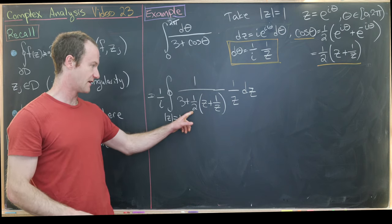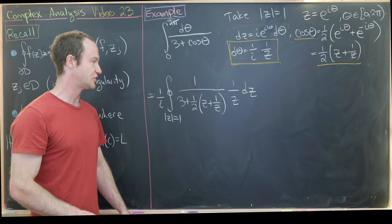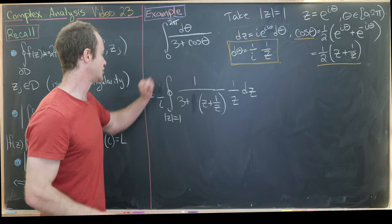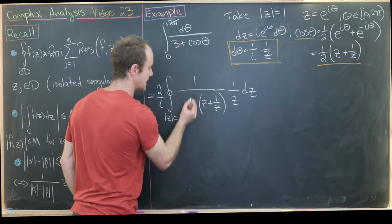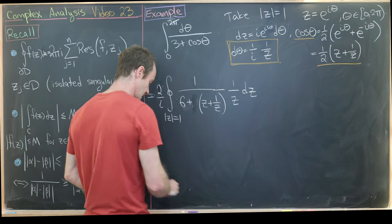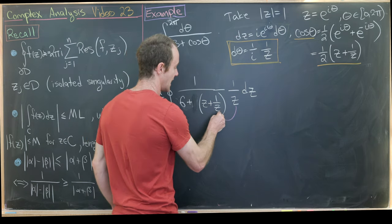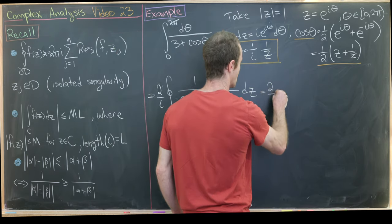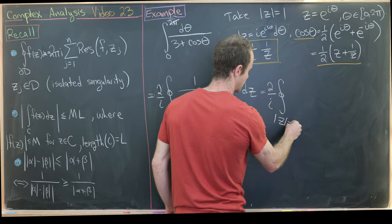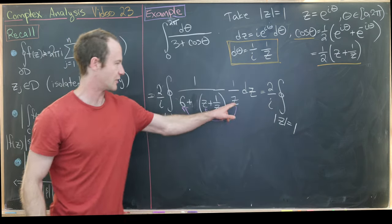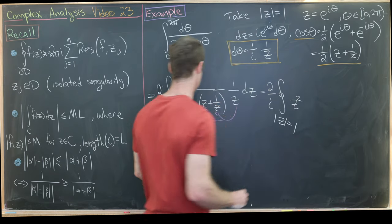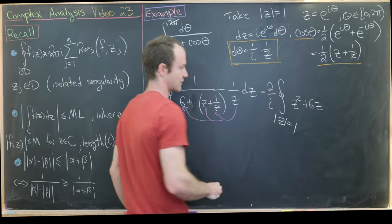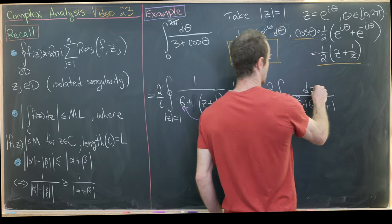After substitution, the integral becomes (1/i) times the integral over |z| = 1 of 1 over (3 + (1/2)(z + 1/z)) times (1/z) dz. Multiplying numerator and denominator by 2 and distributing z through gives (2/i) times the integral over |z| = 1 of 1 over (z² + 6z + 1) dz. Now we have a rational function, so we find poles by solving z² + 6z + 1 = 0.